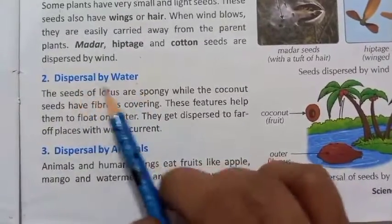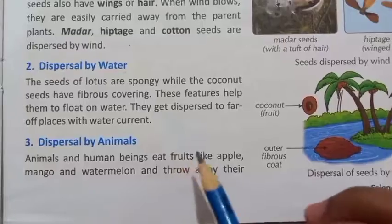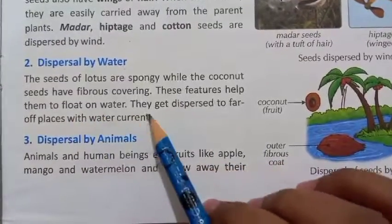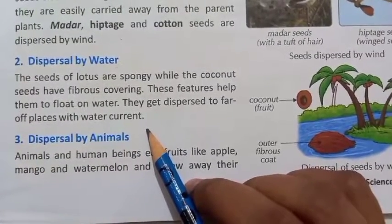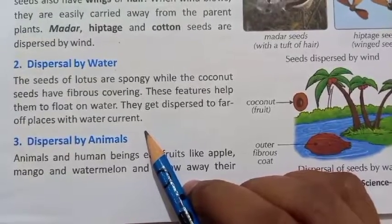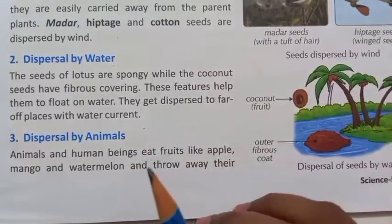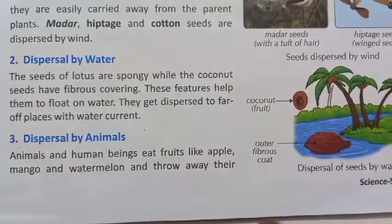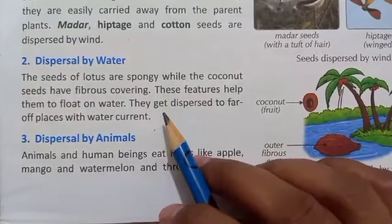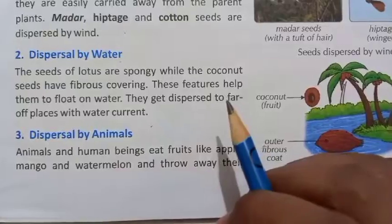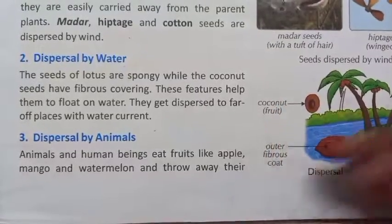The next agent is dispersal by water. The seeds of lotus are spongy, while the coconut seeds have a fibrous covering. These features help them to float on water and they get dispersed to far off places with water current. The seeds of some fruits have a waterproof covering and are light enough to float on water — for example, coconut and lotus.